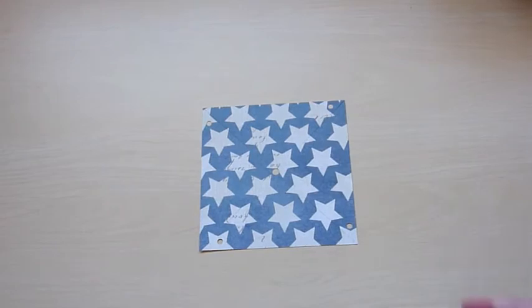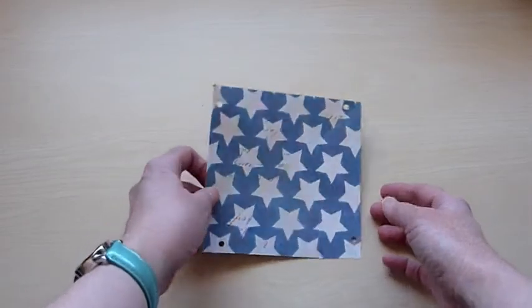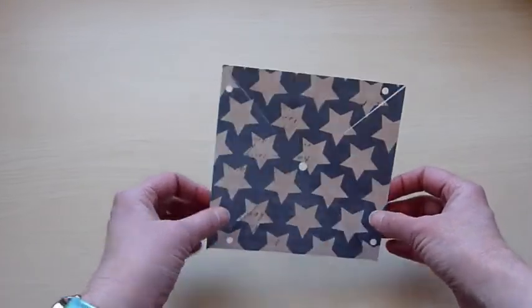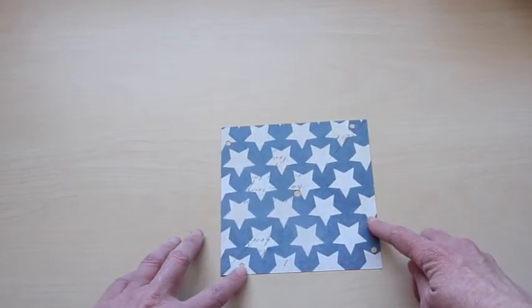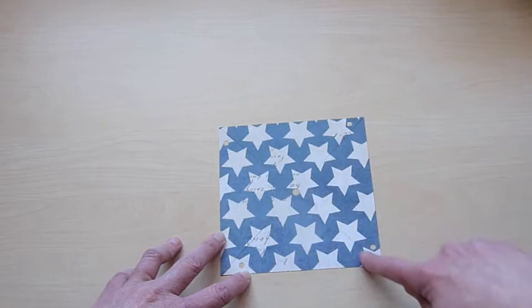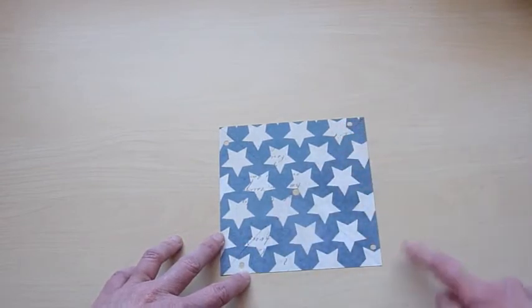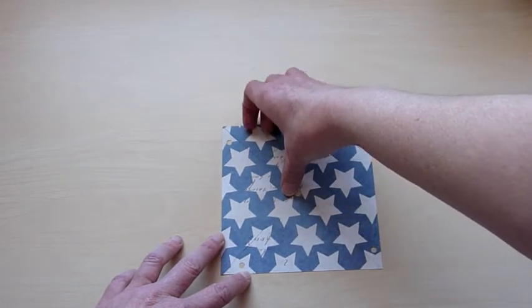For my pinwheels, I actually used my Silhouette Cameo to cut out a pinwheel shape that I found in the Silhouette Studio online store. But you can easily make these yourself. All you need is a square, mine is a 5 1⁄2 inch square, and you could just use a ruler to draw a line from corner to corner, and then cut until you're about an inch from the center on each of the lines.